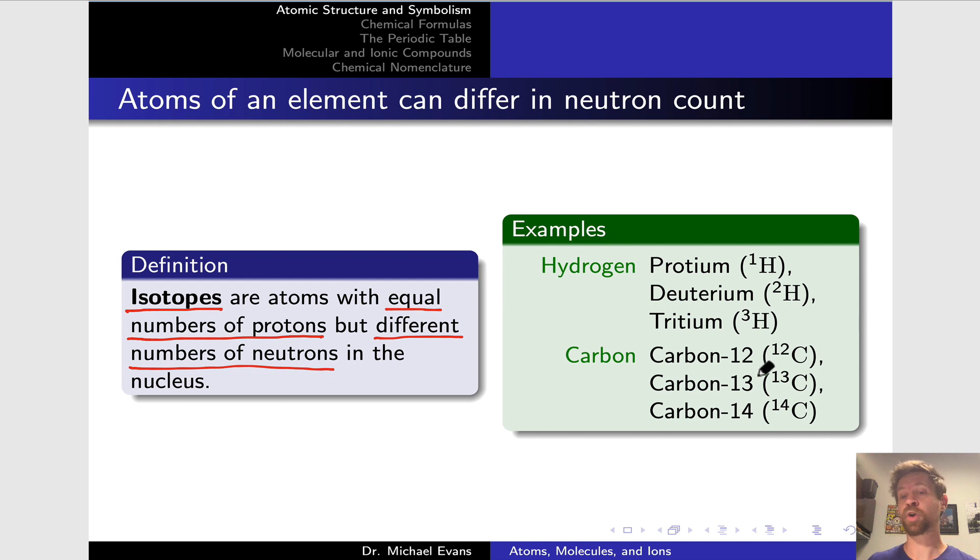Among carbon isotopes, carbon-12 is the most common. This has six protons and six neutrons. Carbon-13 has six protons and seven neutrons. And carbon-14, six protons and eight neutrons. 13 and 14 are less common than carbon-12, but we can absolutely detect carbon-13 in natural samples of, for example, organic compounds that contain carbon.